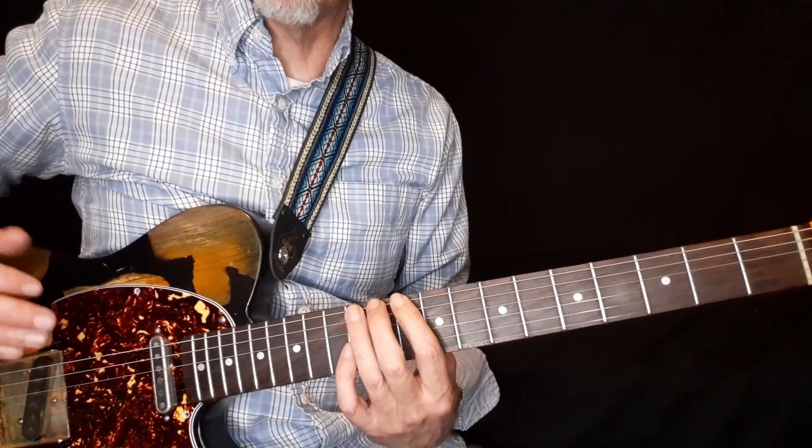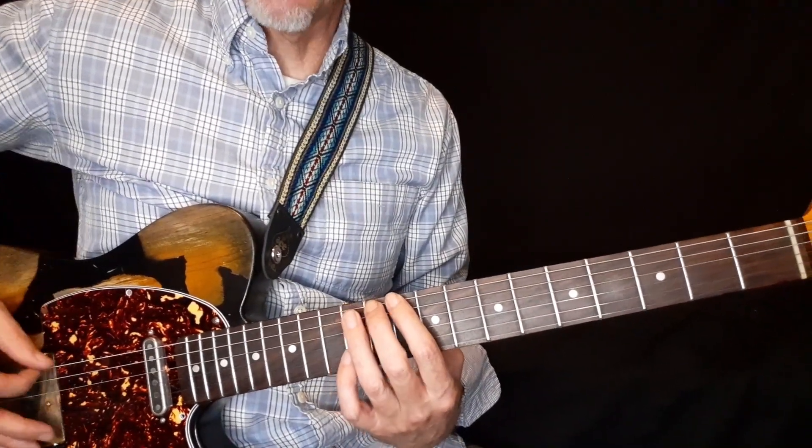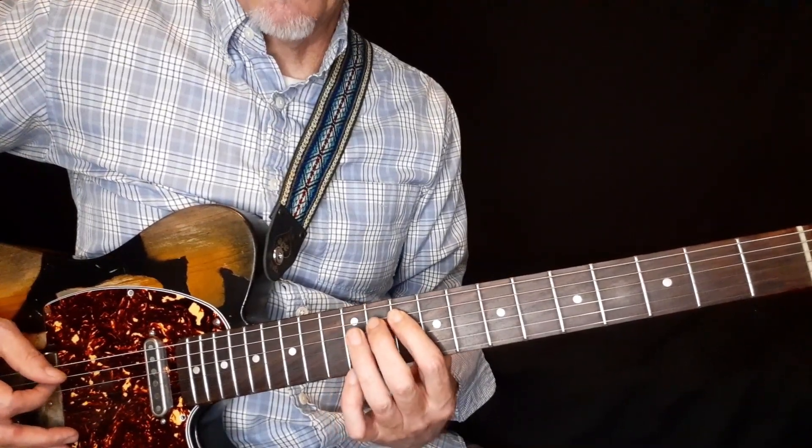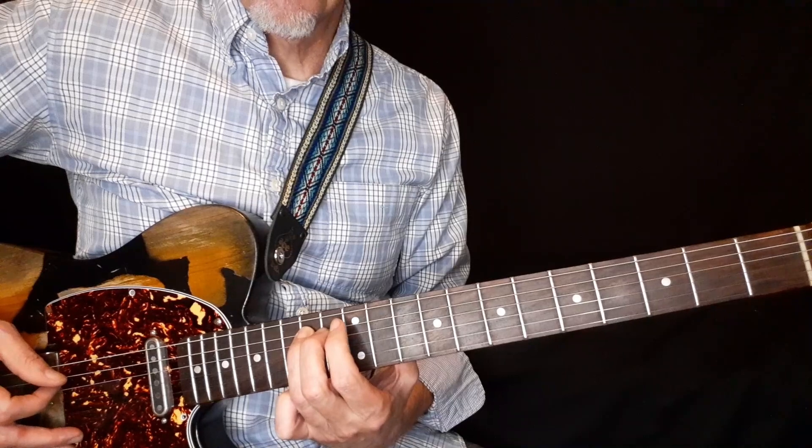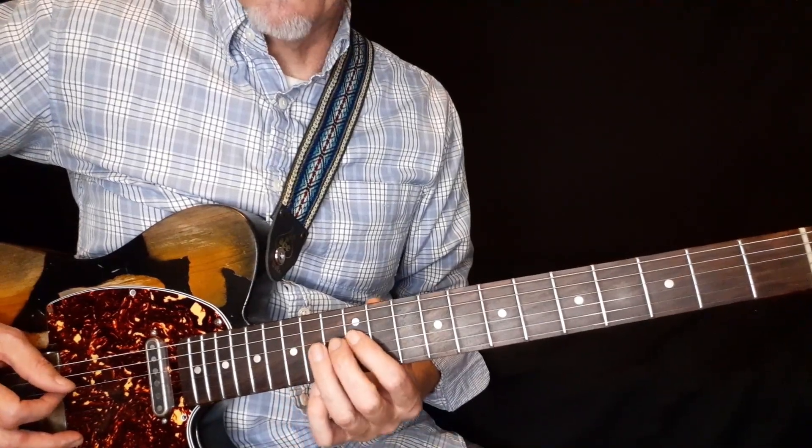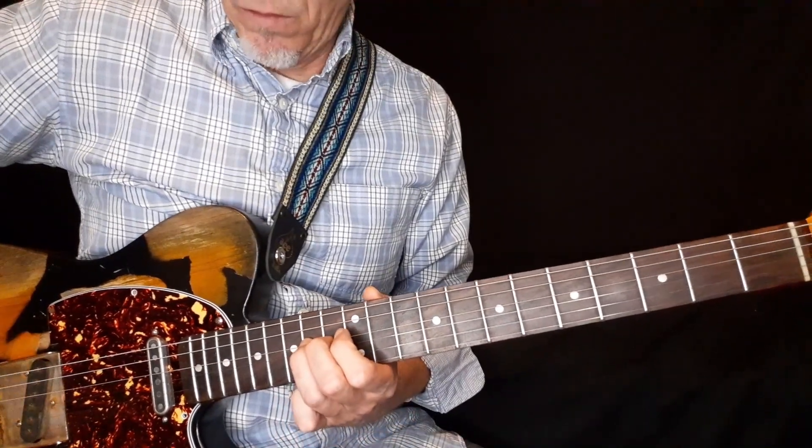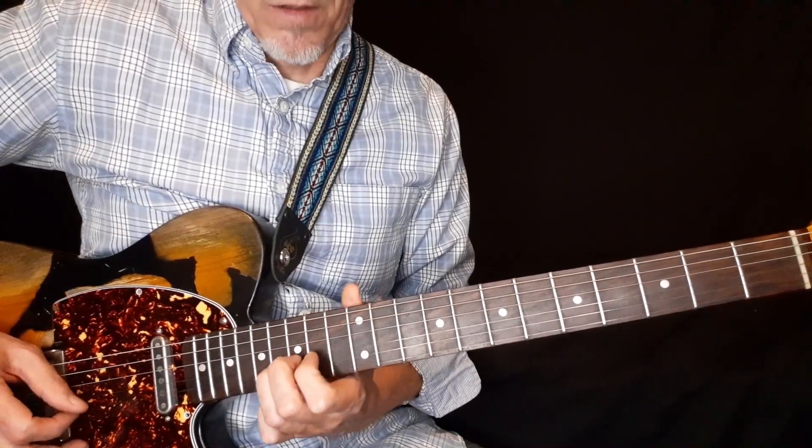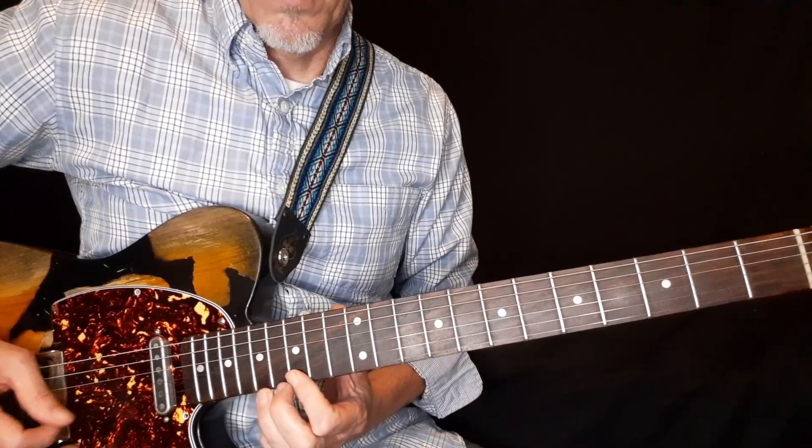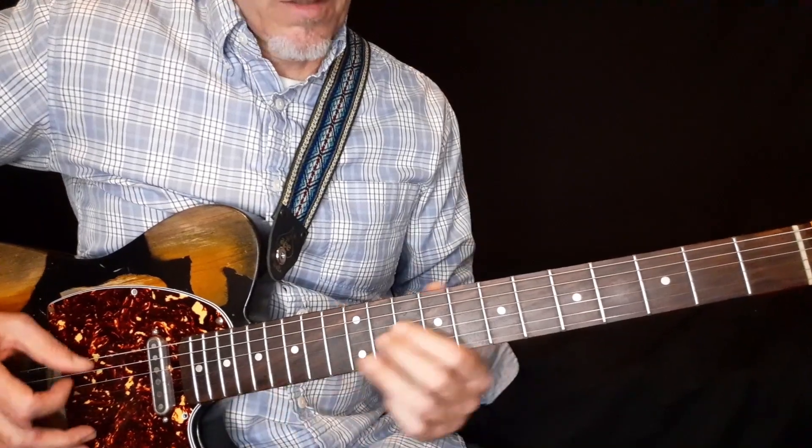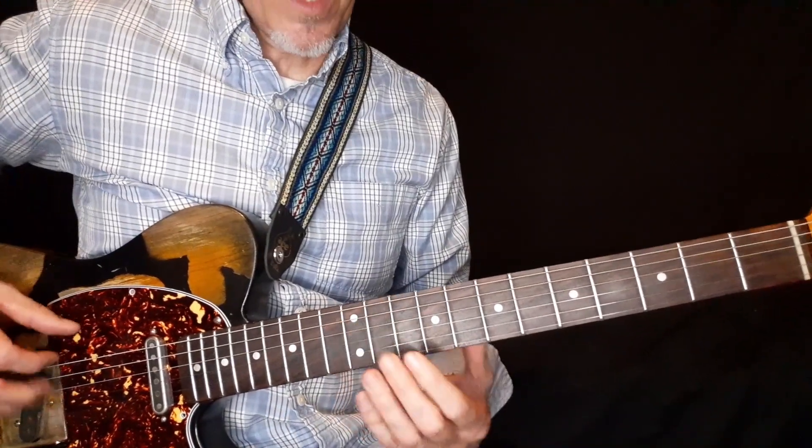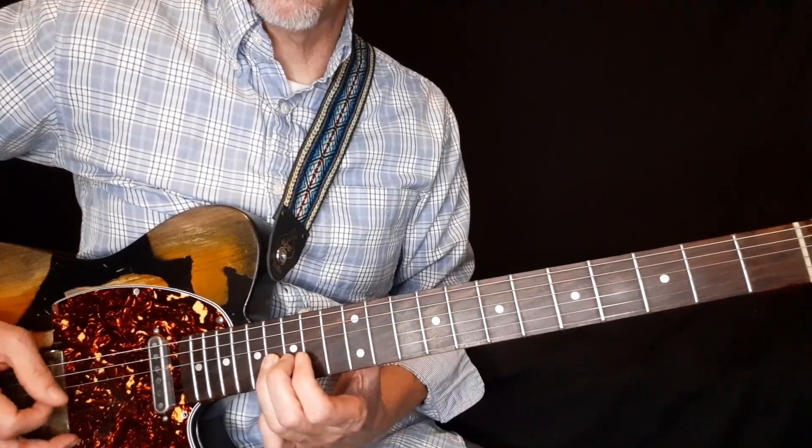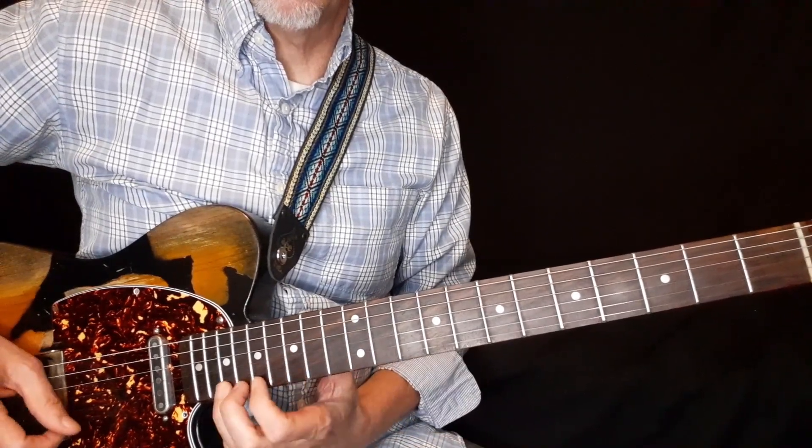We would start our minor pentatonic run by counting one, two, moving up a string, one, two, three, going up another string, doing one, two, up another string. So our minor pentatonic is always one, two, one, two, three, one, two, one, two, three, one, two, one, two, three.